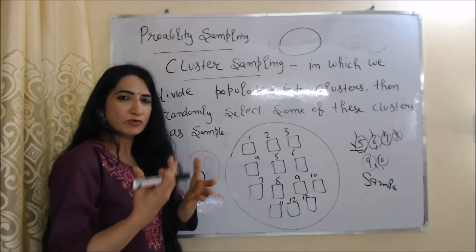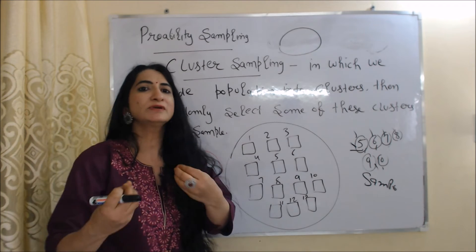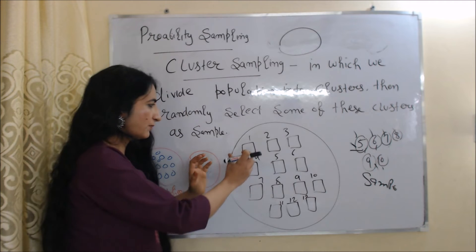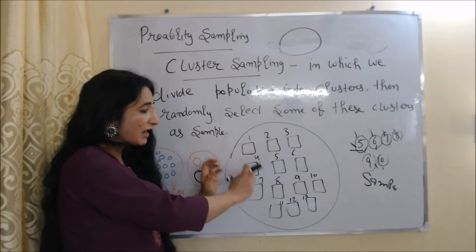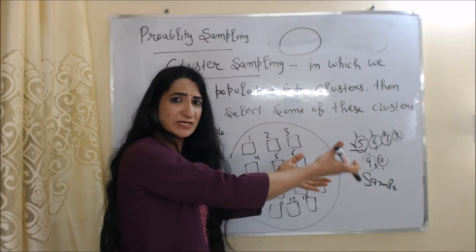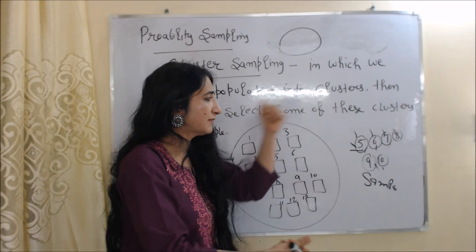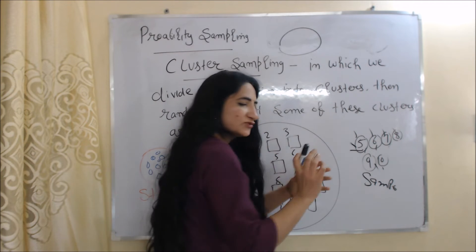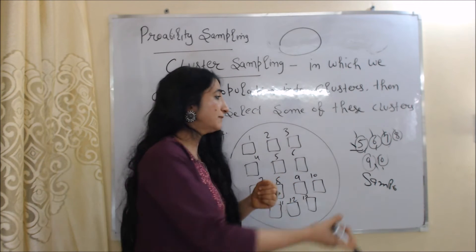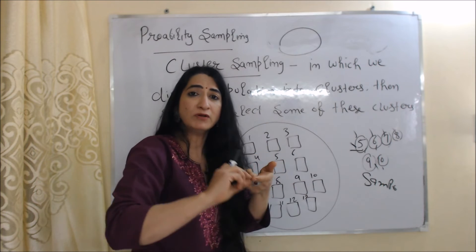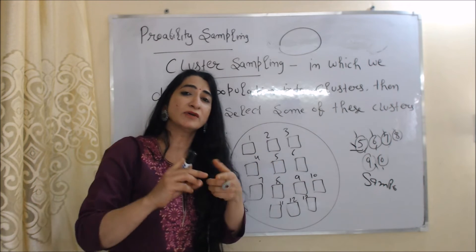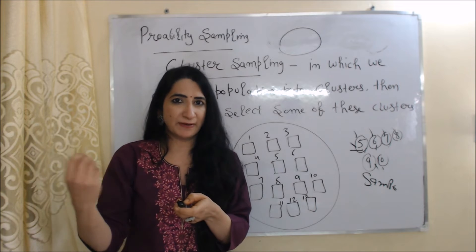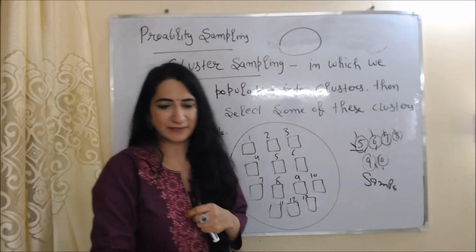For example, the government wants to know the effect of a new taxation policy. First, the government divides the whole population into different districts, then randomly picks some districts as a sample — for example, districts 5 through 10. When a district is picked as a sample, the whole villages and towns within that district are also part of the sample. This is cluster sampling.